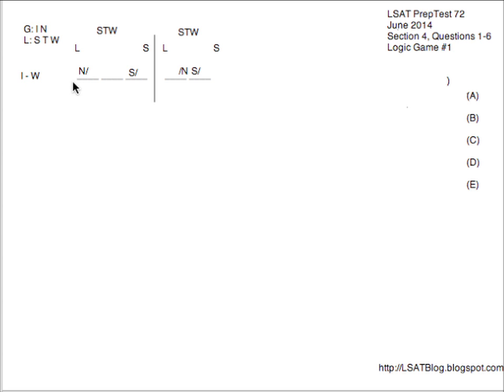That's pretty much it for the general setup; we'll get more into things with the specific questions. Let's jump in with question number one, which is a typical orientation question. We just want to take one rule or inference at a time and check that rule or inference against all five answer choices looking for violations. We know we've got to have one of S, T, and W within each of the two segments, so let's scan through all five looking for violations there.